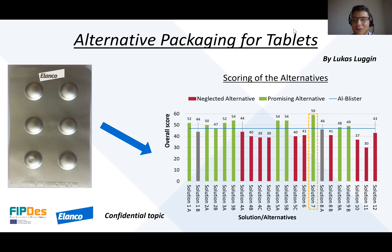Therefore, I have been looking into different alternatives and ways to improve the current aluminum blister. In the end, I came up with 22 different alternatives, which have been evaluated using expert interviews with different experts from Elenco, but also external experts. The solutions have been compared using a packaging scorecard and the overall score was calculated. There has been high variability between the solutions. From the 22 different alternatives, 10 have been seen as promising, and these solutions are marked here in green.